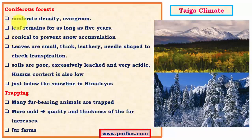Coniferous forests are of moderate density and are evergreen, with leaves remaining for as long as five years. They are conical in shape, especially to prevent snow accumulation so that branches don't break under the weight of snow. The leaves are leathery, small, thick, and needle-shaped, especially to check evaporation during the warm summer months when temperatures can reach 20 to 25 degrees Celsius. This helps prevent excessive moisture loss through transpiration from the stomata of leaves.